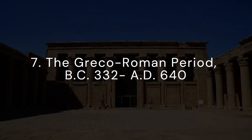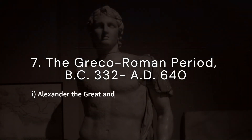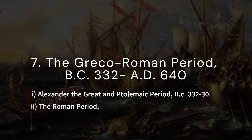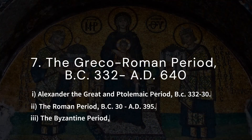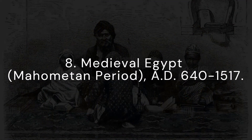7. The Greco-Roman period, 332 BC to AD 640. I. Alexander the Great and the Ptolemaic period, 332–30 BC. 2. The Roman period, 30 BC to AD 395. 3. The Byzantine period, AD 395–640. 8. Medieval Egypt, Mohammedan period, AD 640–1517.